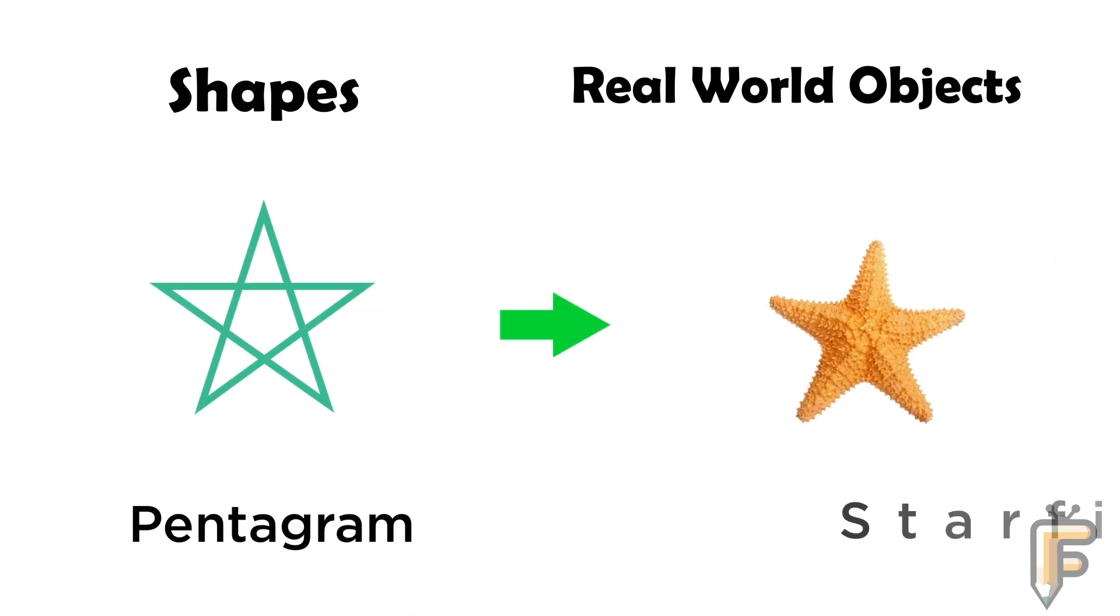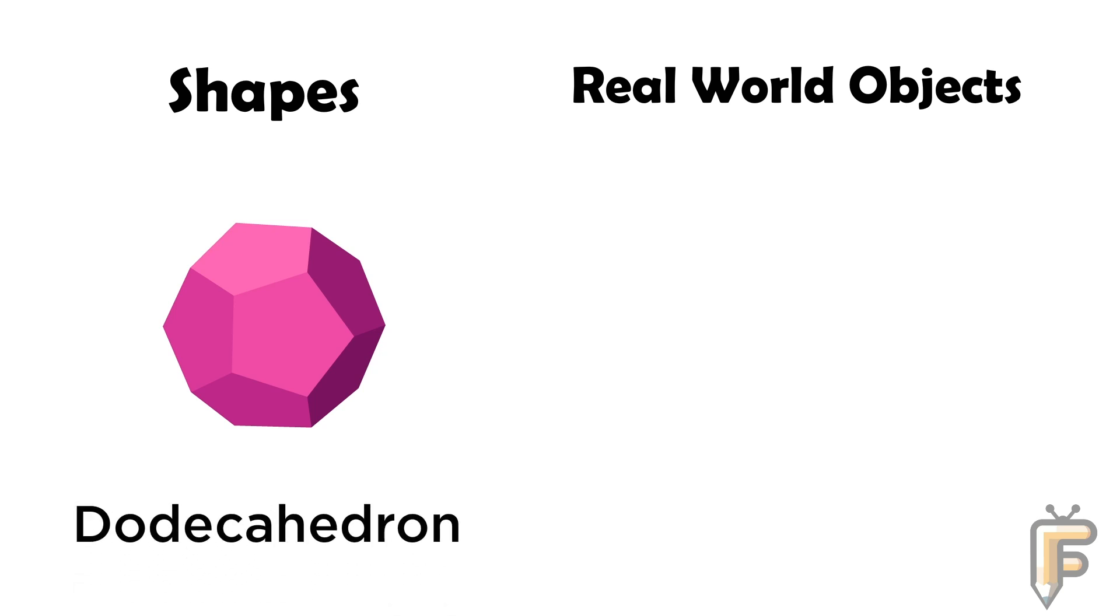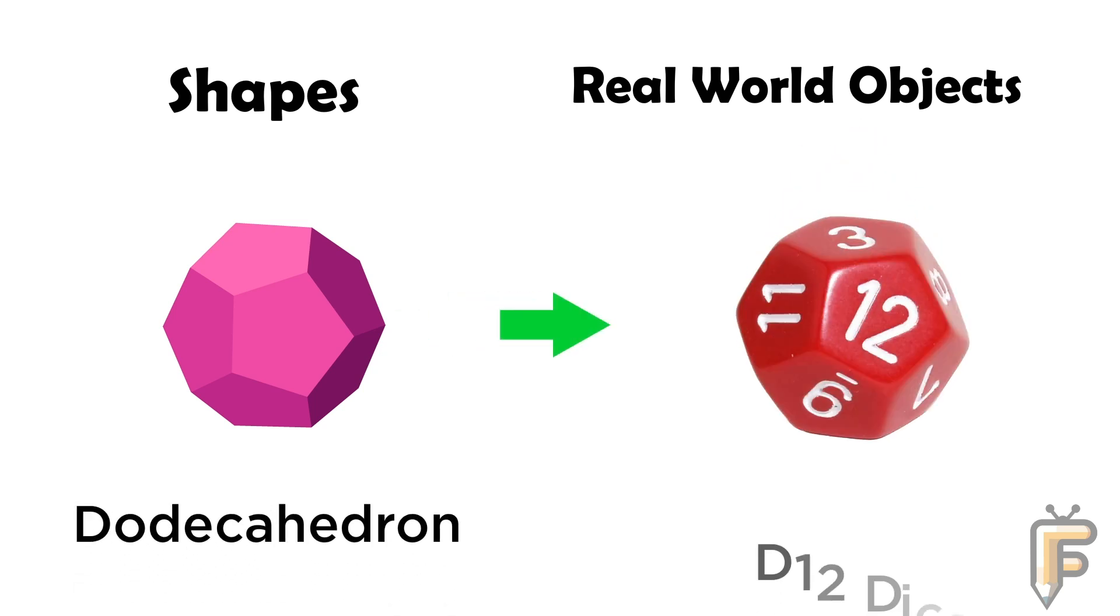Pentagram: starfish is pentagram shape. Dodecahedron: D12 dice is dodecahedron shape.